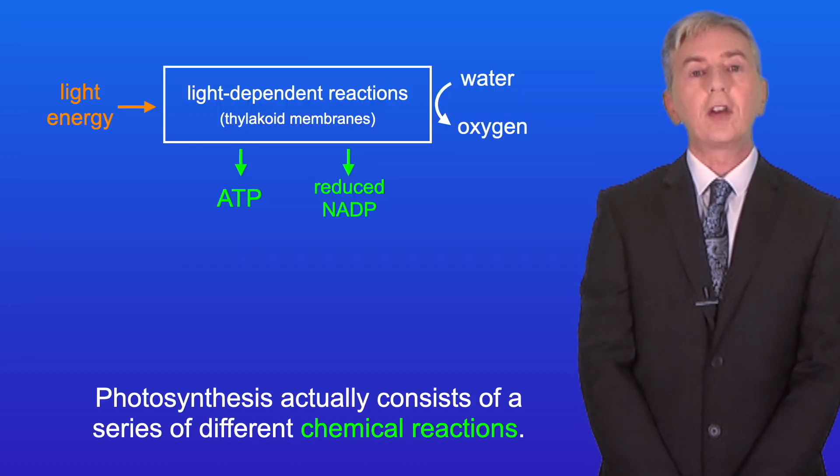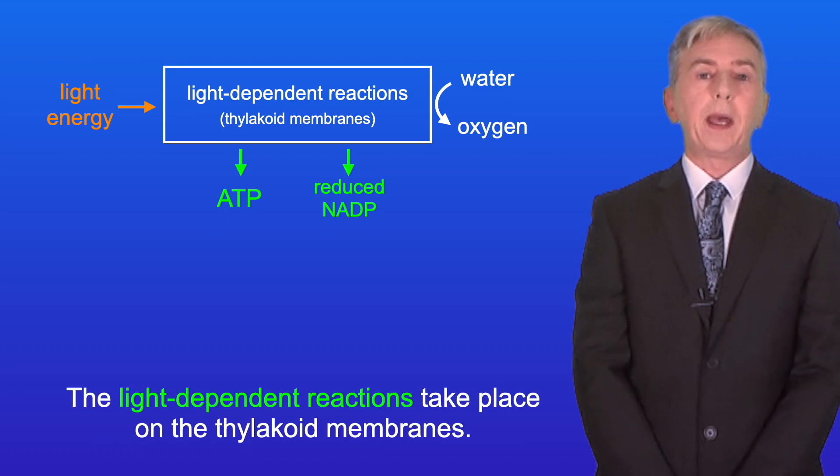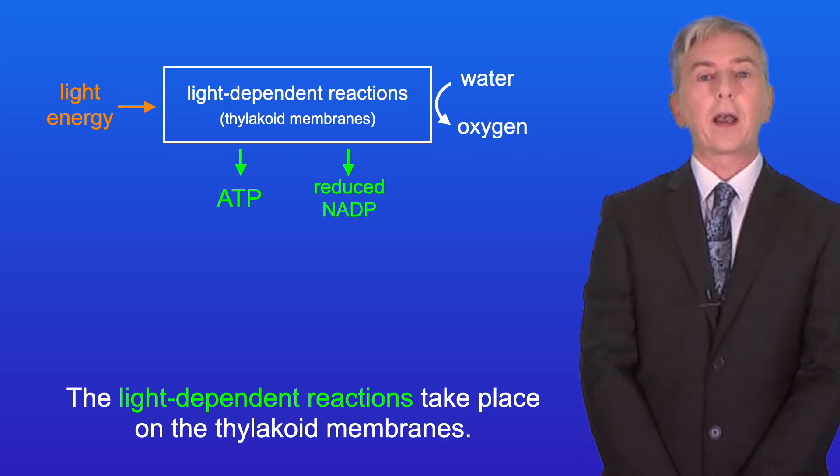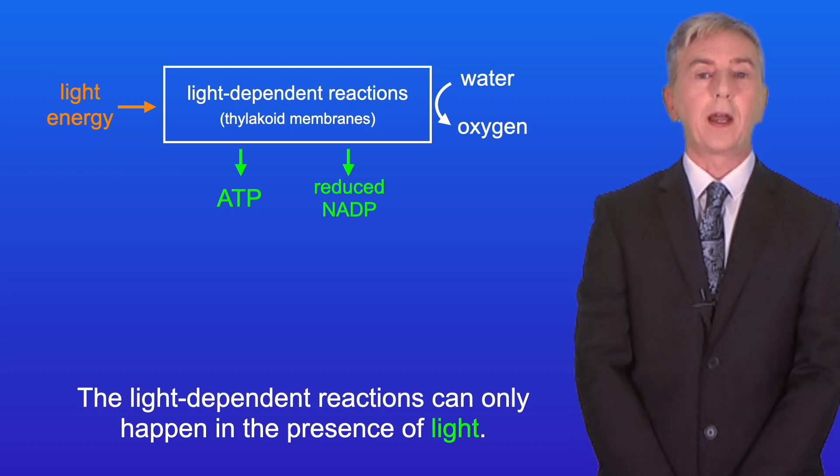Now photosynthesis actually consists of a series of different chemical reactions. We can divide these reactions into two groups. The light-dependent reactions take place on the thylakoid membranes, and the light-dependent reactions can only happen in the presence of light.